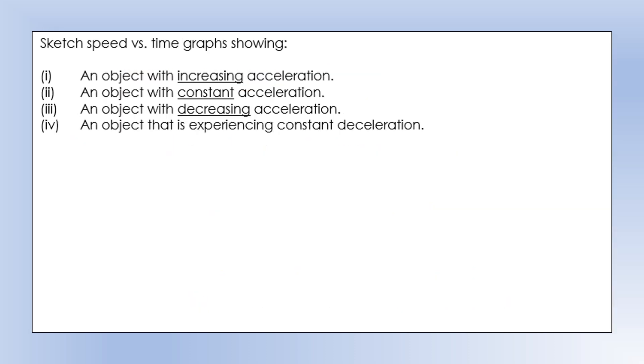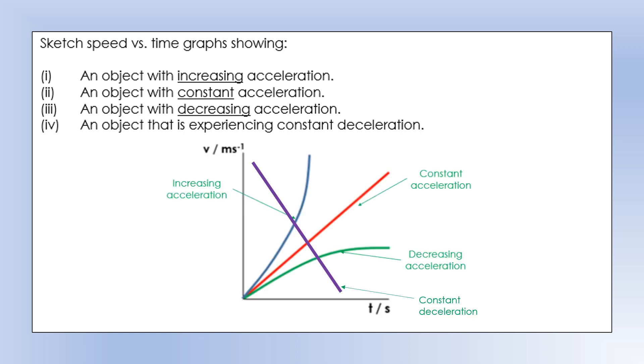Sketch speed versus time graph showing these different types of acceleration or deceleration. Increasing acceleration would be shown by a graph with increasing gradient. Constant acceleration would be a straight line graph, that's in the red. Decreasing acceleration, this is the one people often get confused about. Decreasing acceleration still means the object is getting faster, because it's accelerating. But you can see the gradient is decreasing over time. It's still getting faster, but the rate at which its speed increases is decreasing. Whereas constant deceleration means speed is decreasing, and it's a straight line graph.